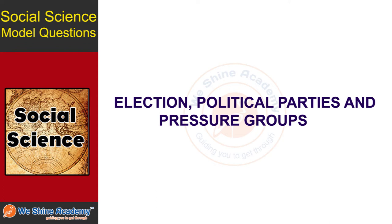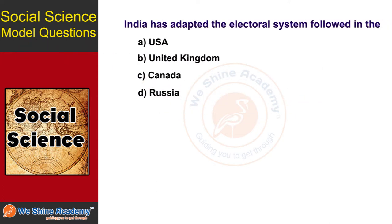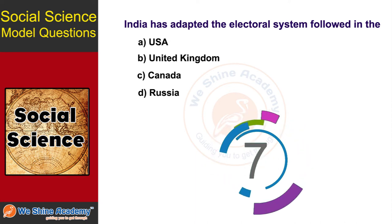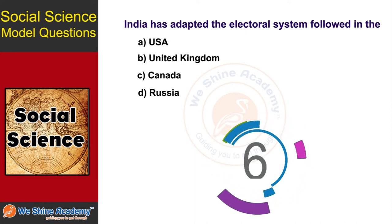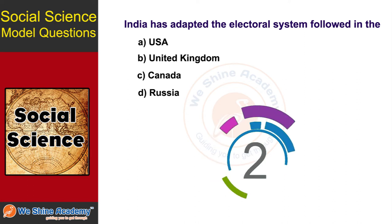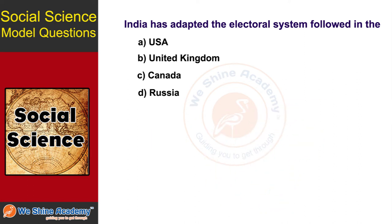Let us start now. The first question is: India has adopted the Electoral System from which country? The answer is Option B, United Kingdom.